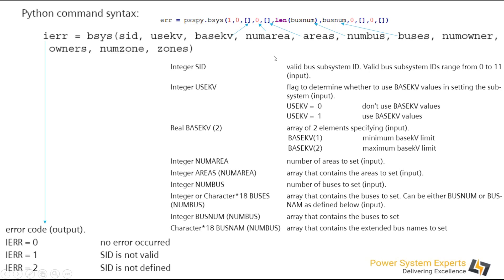For area numbers, bus numbers, owners, or zones, you need to provide two values: the first is how many areas or buses you are working with. For example, if you want to select area 1 and area 2 out of 5 areas, your list is going to be [1, 2] within square brackets, and you will update the count value as 2. This is how you can use this bus system API.